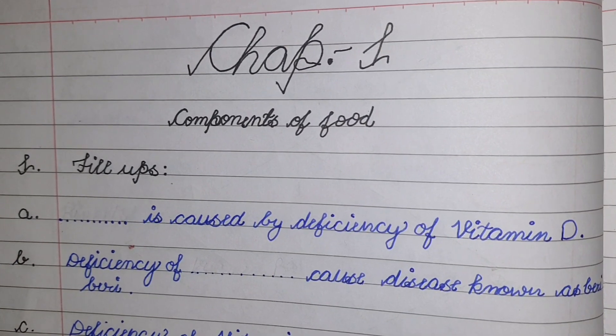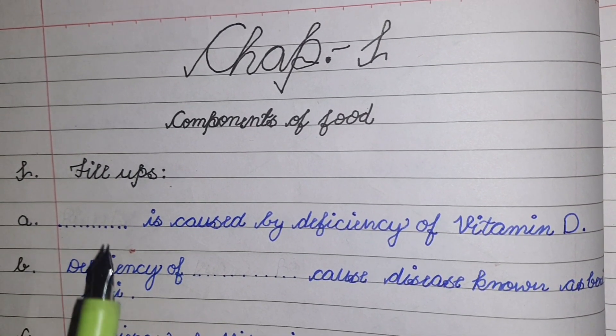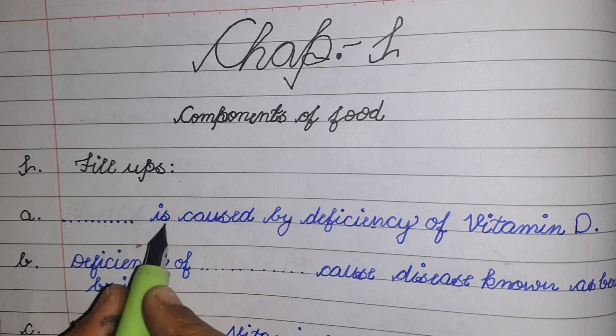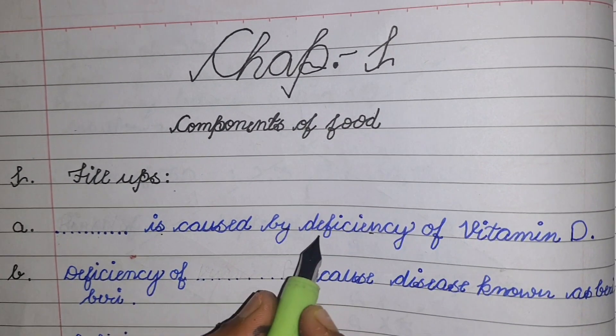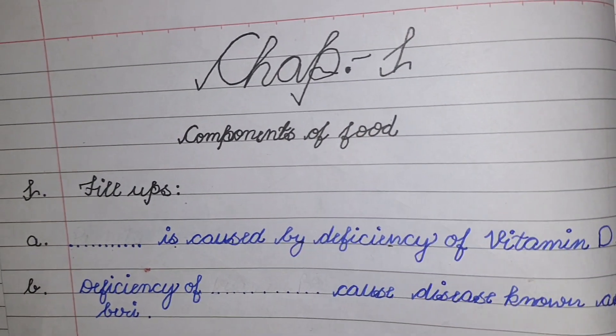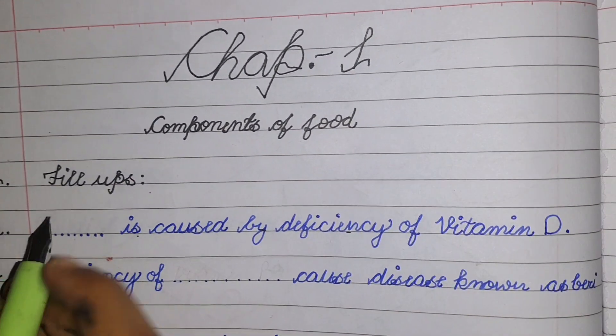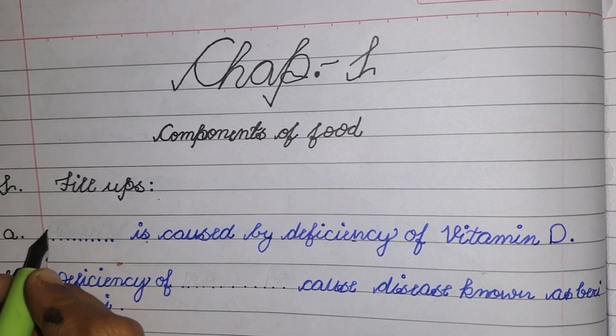Our first question is: dash is caused by deficiency of Vitamin D. The answer is rickets.